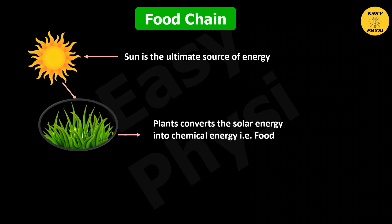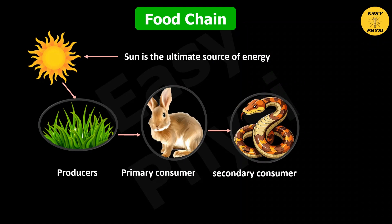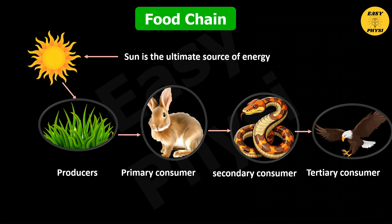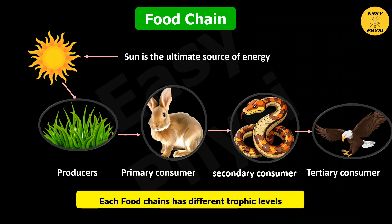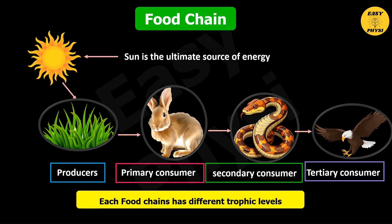In any food chain, the sun is the ultimate source of energy. Plants convert solar energy into chemical energy — that is, food — so the plants are called producers. The animals that feed on plants are called primary consumers, the animals that feed on primary consumers are called secondary consumers, and the animals that feed on secondary consumers are called tertiary consumers. We find producers in the first trophic level, primary consumers in the second, secondary consumers in the third, and tertiary consumers in the fourth.